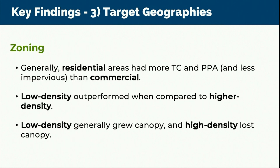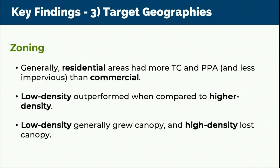At the zoning scale, residential areas had more tree canopy and more plantable space, and less impervious surface than commercial areas. Low-density areas — whether residential or commercial — outperformed higher-density areas. Lower-density areas grew canopy while higher densities lost canopy. This is typical of most canopy assessments, because there's simply more plantable space in lower-density and residential developments compared to commercial or industrial.